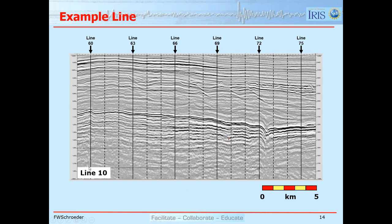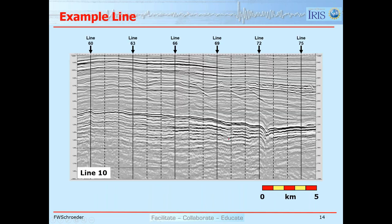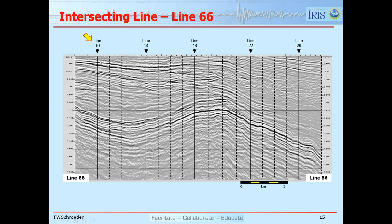Here's an example — line 10, the westernmost north-south line. South is on the left and north is on the right. There's a normal fault here and another fault with a little reverse movement on it late. The Top Latrobe unconformity is where the red line is located. It's characterized by more continuous, higher-amplitude reflectors beneath it and moderate to low amplitude, less continuous reflectors above it.